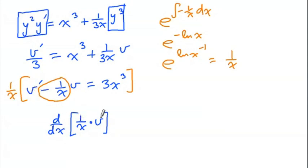And then second times the derivative of the first will give you the negative 1 over x squared. So that was just the product rule, and that's the whole point of the integrating factor, equals 3x squared. Then we can integrate both sides.